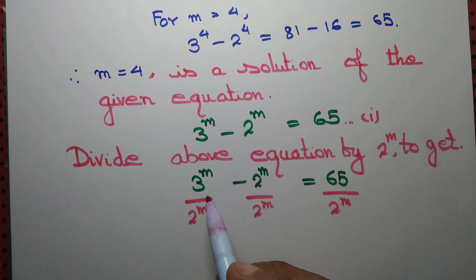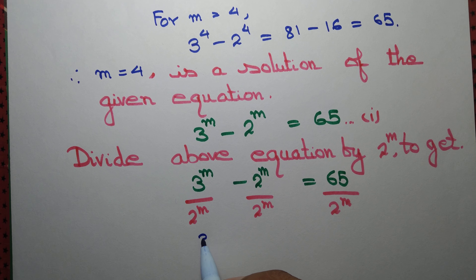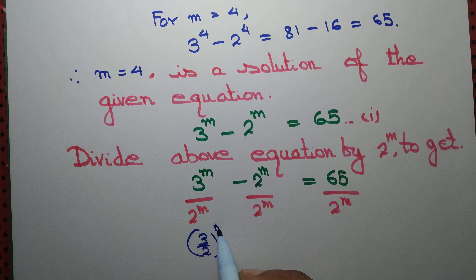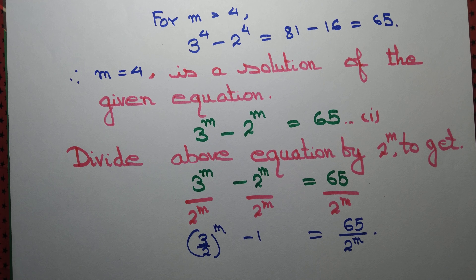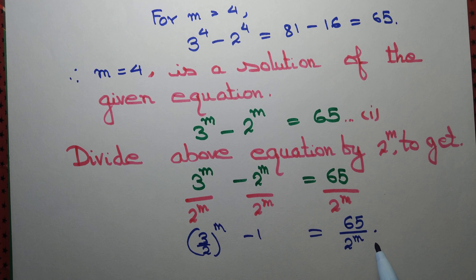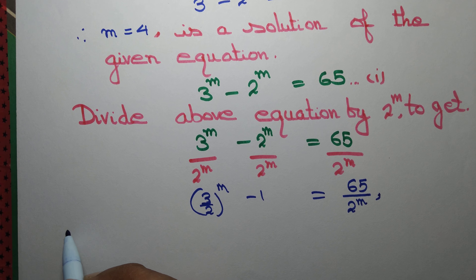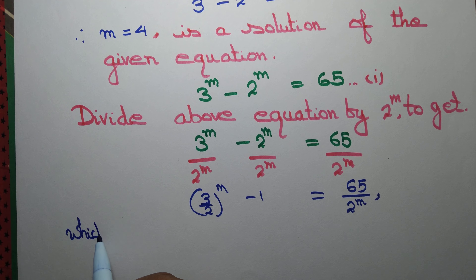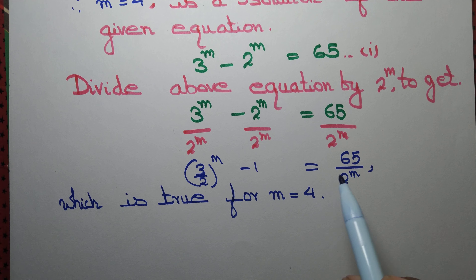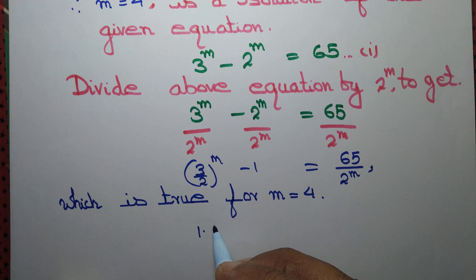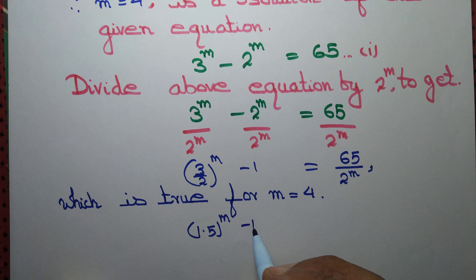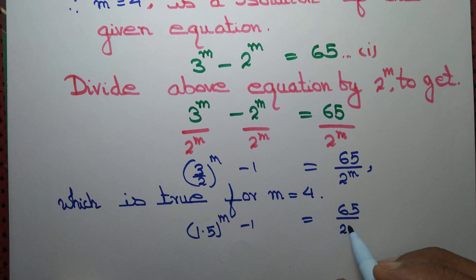Now by the law of indices, 3 to the power m by 2 to the power m can be written as 3 by 2 to the power m minus 1, equal to 65 by 2 to the power m. Observe that this equality is true for m equal to 4. We know that left-hand side equals right-hand side for m equal to 4. Now 3 by 2 to the power m can be written as 1.5 to the power m equal to 65 by 2 to the power m.